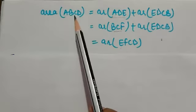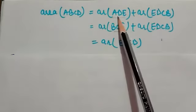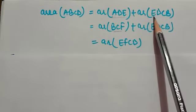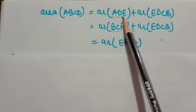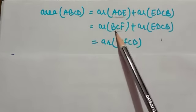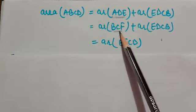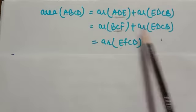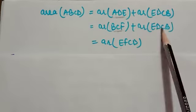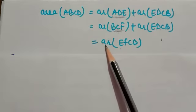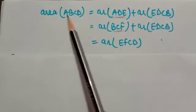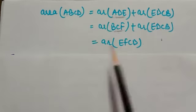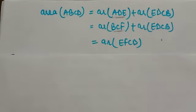Area of ABCD = area of ADE + area of EDCB. Since we proved area of ADE = area of BCF, we can replace it. Adding both terms gives area of EFCD. Therefore, area of parallelogram ABCD = area of parallelogram EDCF — which is what we wanted to prove. This completes Theorem 9.1.